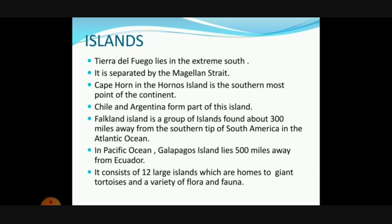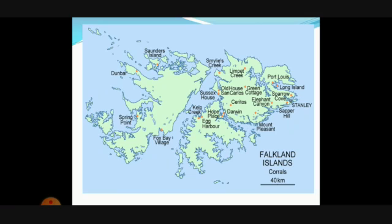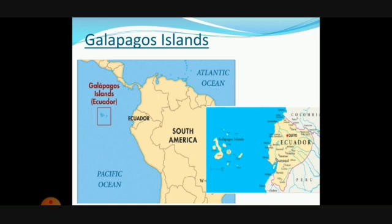Falkland Island is a group of islands found about 300 miles away from the southern tip of South America, located in the Atlantic Ocean. In the Pacific Ocean you can see Galapagos Island, which is 500 miles away from Ecuador. It consists of 12 large islands that are home to giant tortoises and a variety of flora and fauna. You can see Falkland Island on the map and near the bottom of Chile the Magellan Strait, along with Tierra del Fuego Island. Galapagos Island is on the Pacific side at Ecuador.